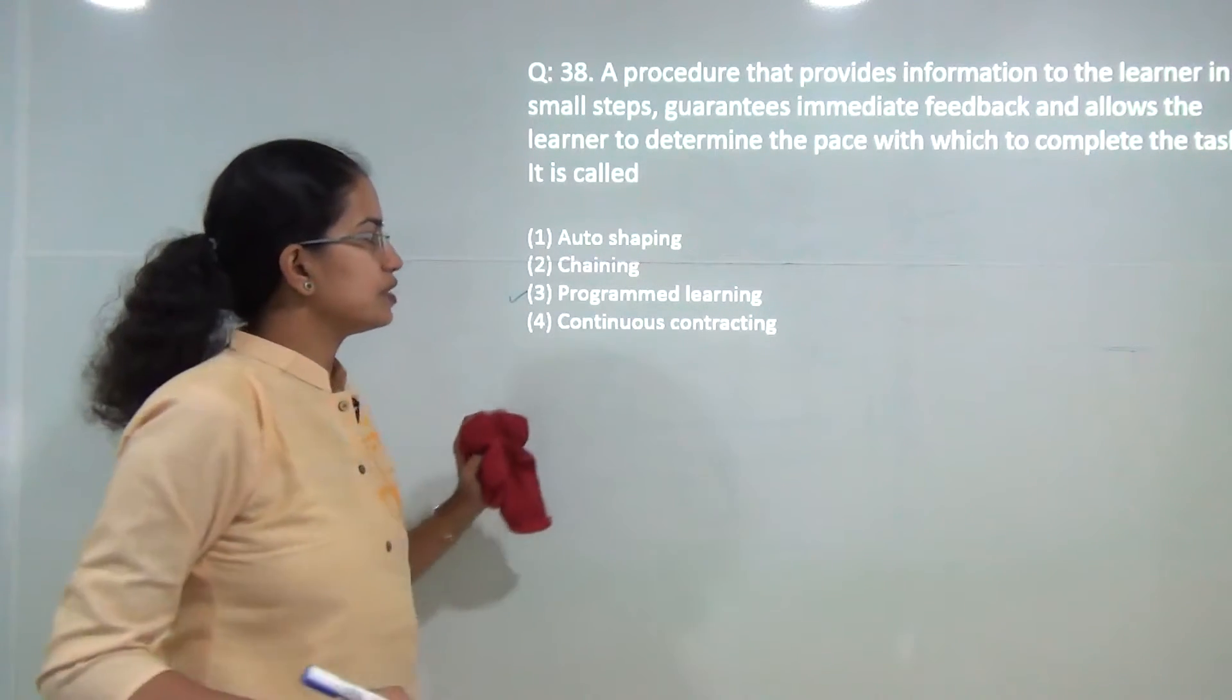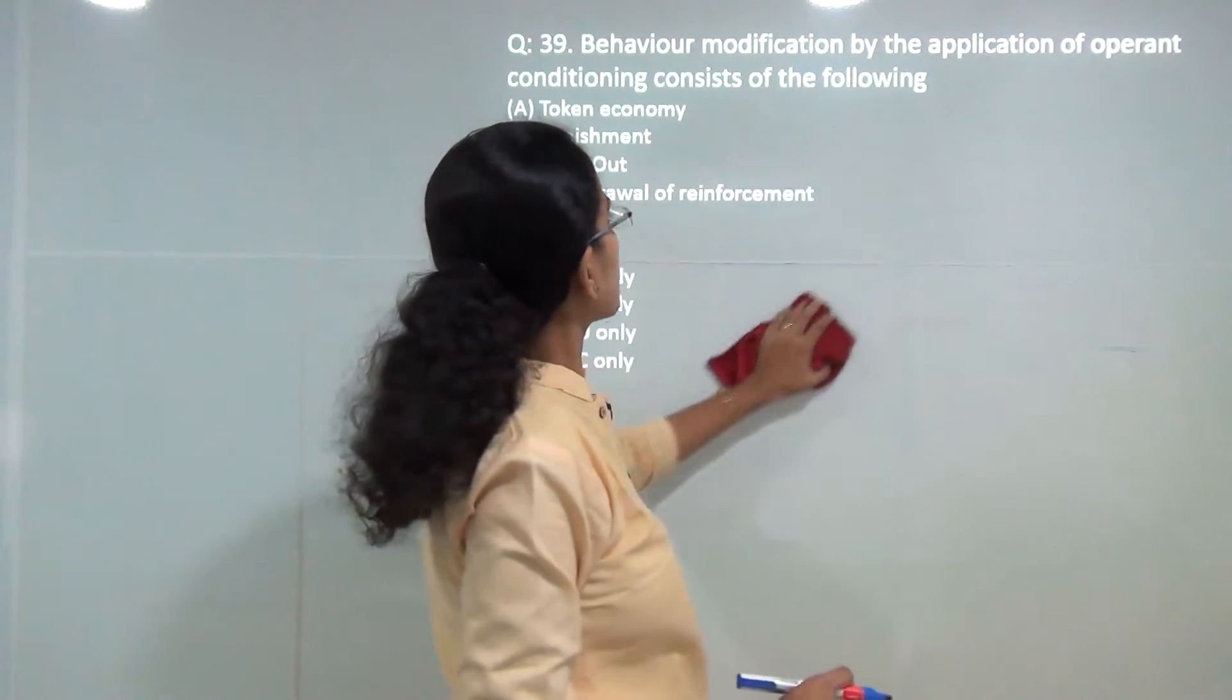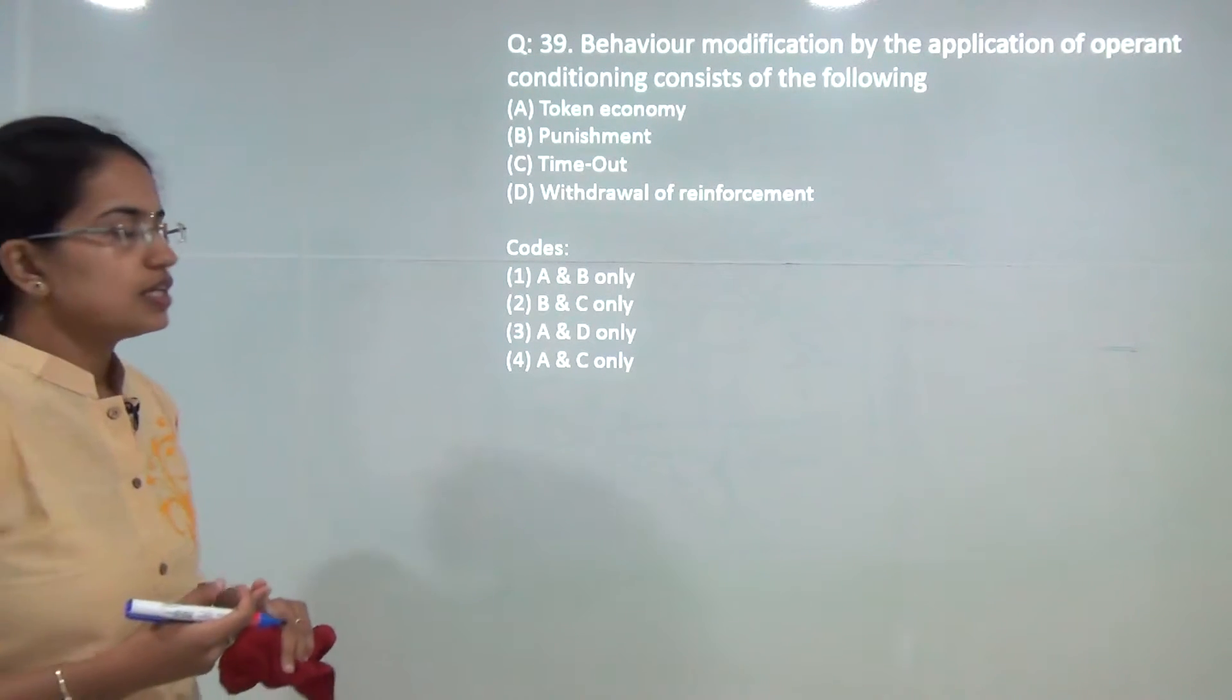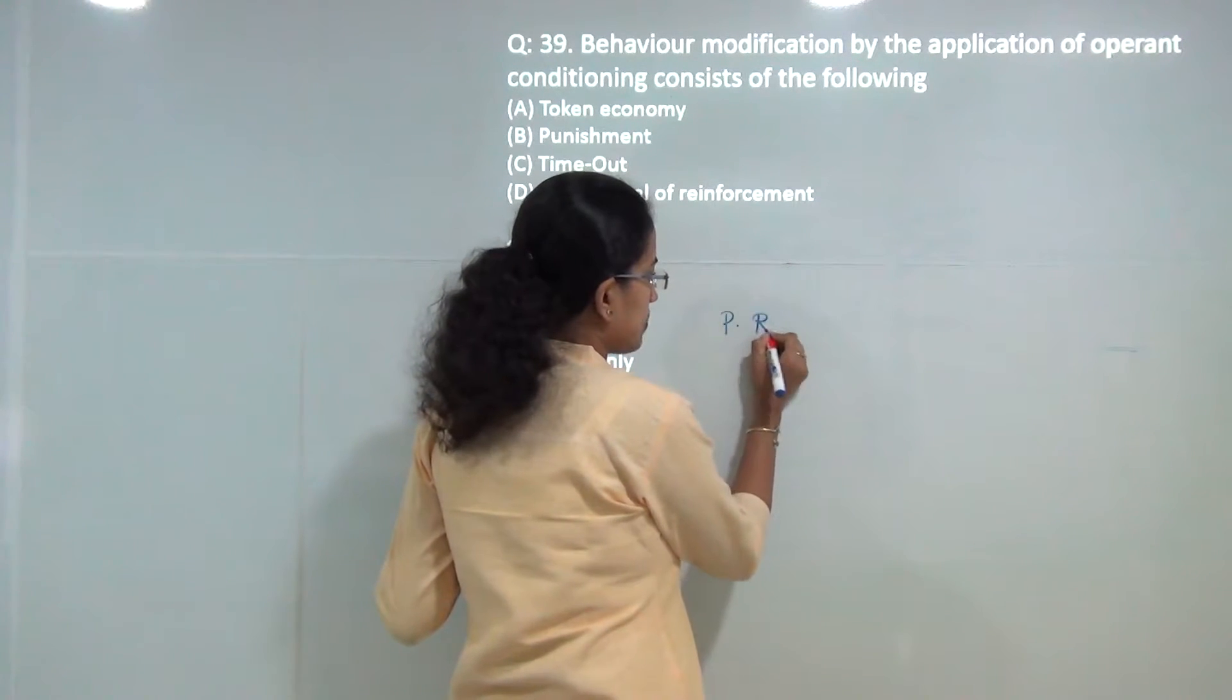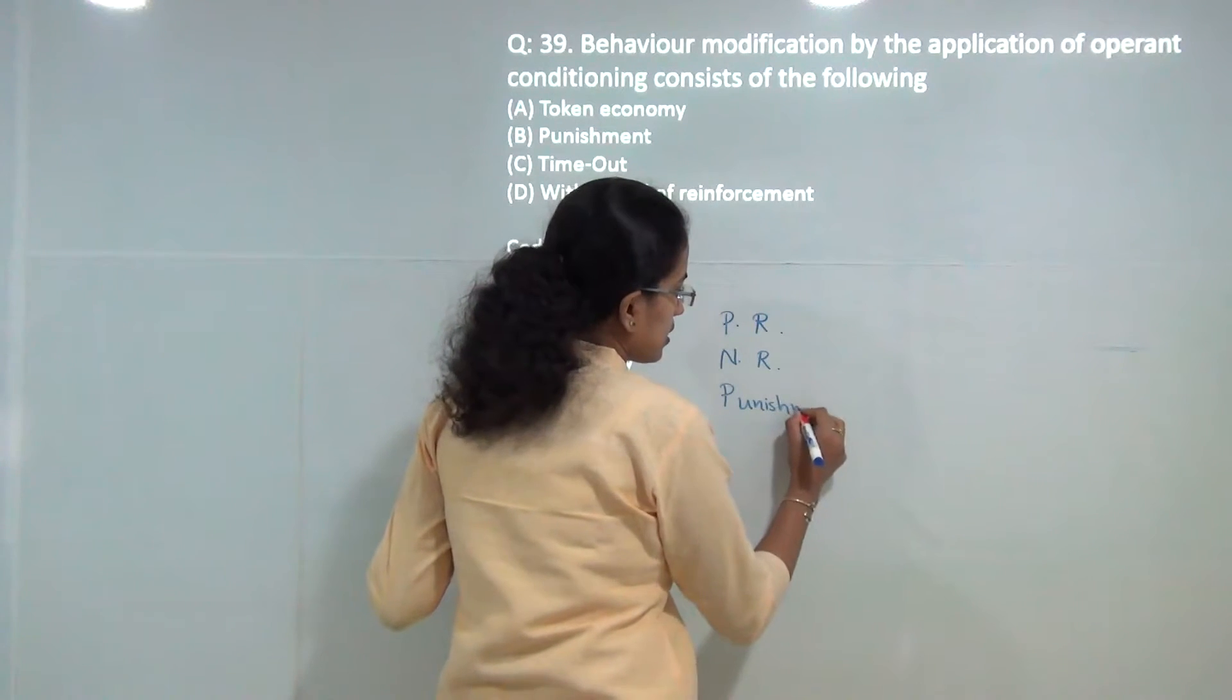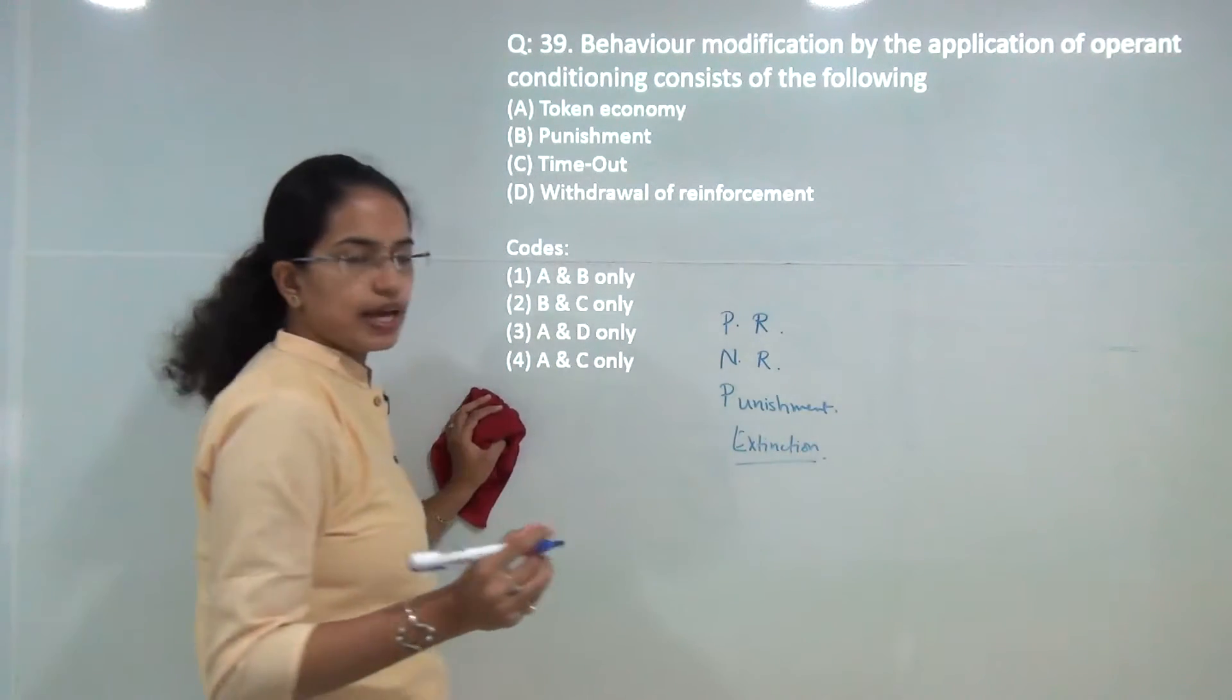Next question, I believe this should be a bonus question because all of the choices are correct. Behavior modification by application of operant conditioning consists of: we can modify behavior by positive reinforcement, by negative reinforcement, punishment is another way.